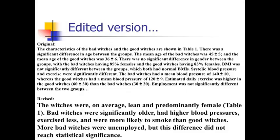Here's my revised edited version. It would say something like: 'The witches were on average lean and predominantly female (table one).' I'm pointing out they were lean and predominantly female — those are important characteristics about witches in general. I don't need to say the groups didn't differ on that, because the reader can see that in the table. Then I point out the differences: 'Bad witches were significantly older, had higher blood pressures, exercised less, and were more likely to smoke than good witches.' Notice I didn't give any exact numbers — we just want to know how they differ. 'More bad witches were unemployed, but this difference did not reach statistical significance.' That's a much more useful paragraph because it gives the reader all the key points, and they can go to the table for details.